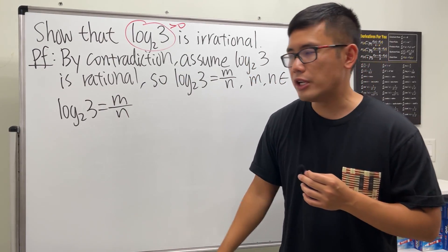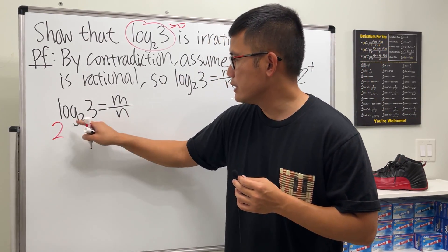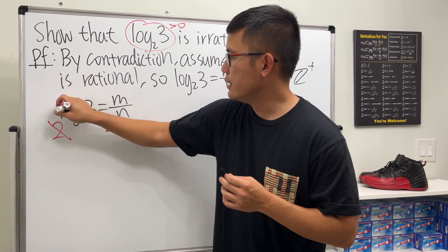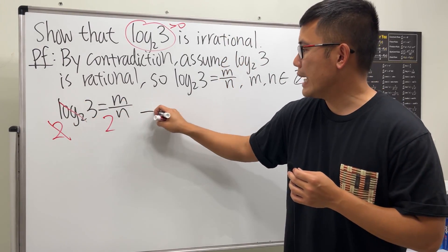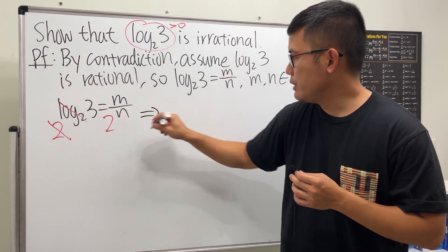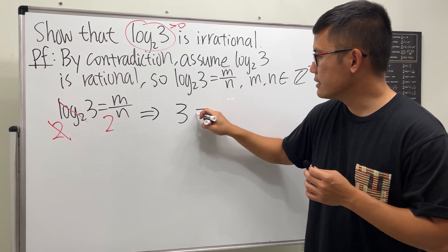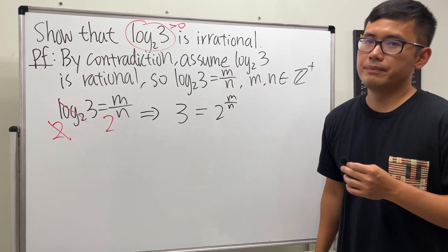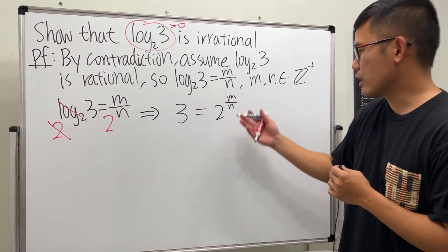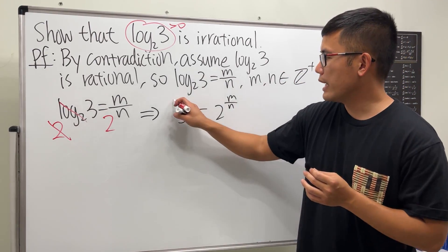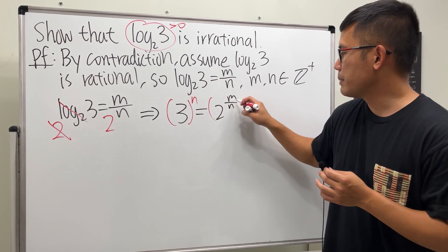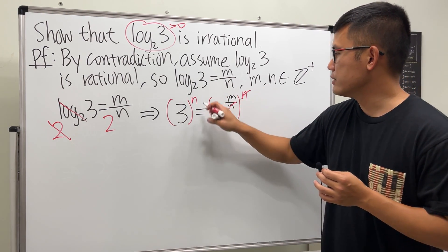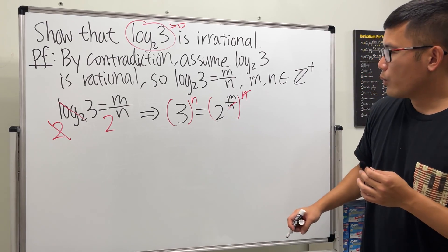Let's go ahead and exponentiate both sides, meaning we put 2 to this power and 2 to that power. This and that cancel, so we are getting just 3 on the left-hand side, and then this is equal to 2 to the m over n's power. And we know we don't like to have rational exponents, so let's go ahead and raise both sides to the n's power like this, so that this and that cancel.